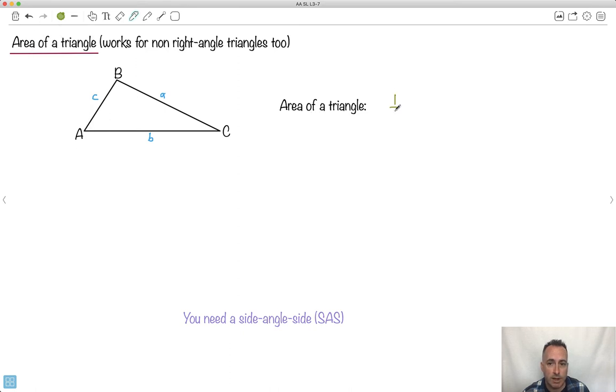We have an equation for the area of a triangle. It's one half times a times b times the sine of angle c. This is the area. This is on your formula booklet, which is nice. You don't have to memorize it. Make sure you know it's on your formula booklet.